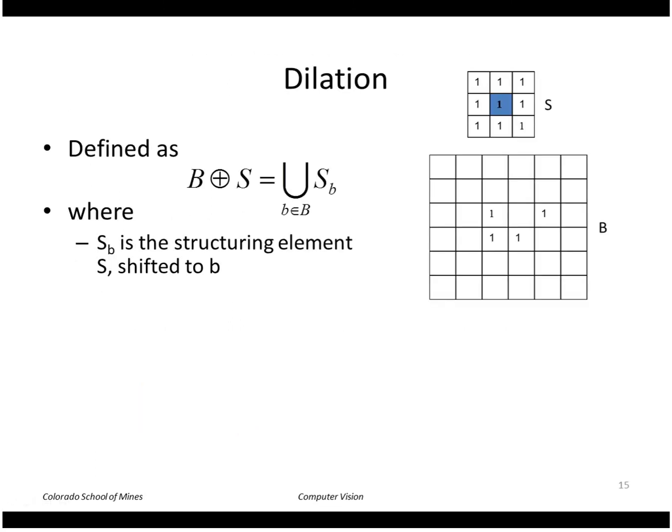First look at dilation. So here's our structuring element. In this case I chose a 3x3 box. Here's a simple binary image with ones and zeros elsewhere.